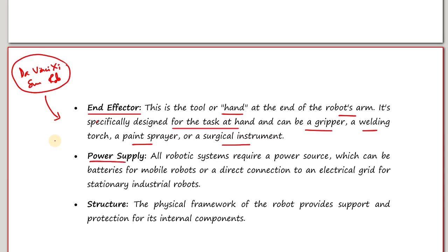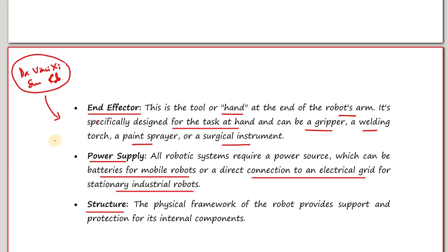The next component is the power supply. All robotic systems require a power source — they run on electricity. The power source can be either batteries for mobile robots or a direct connection to an electrical grid for stationary industrial robots. Finally, there is the structure: the physical framework of the robot which provides support and protection for its internal components.